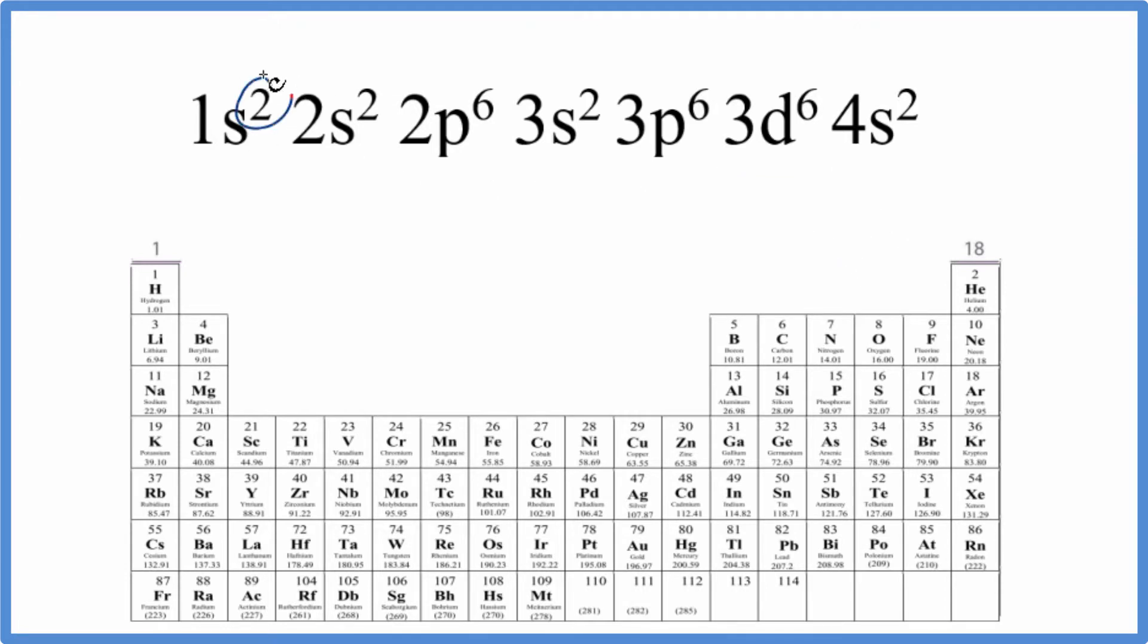The first way is just to count up all of the electrons in the configuration. So when we do that, we count all of these up, we end up with 26 total electrons for this electron configuration.